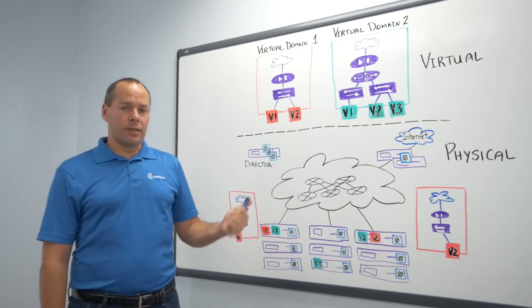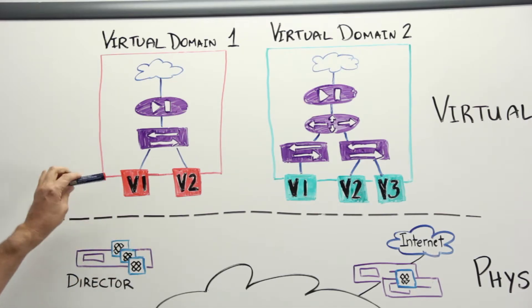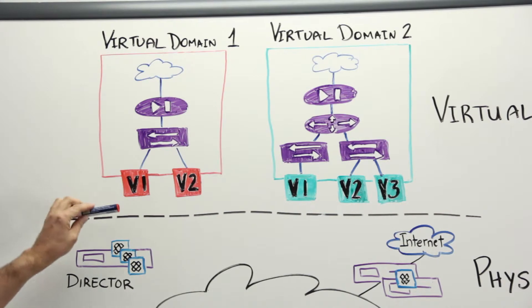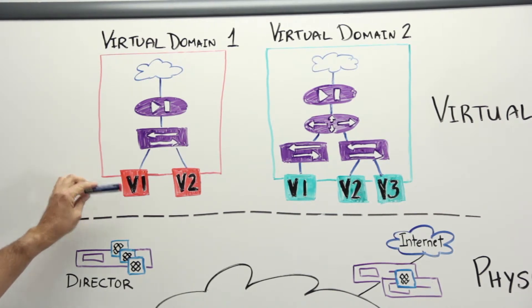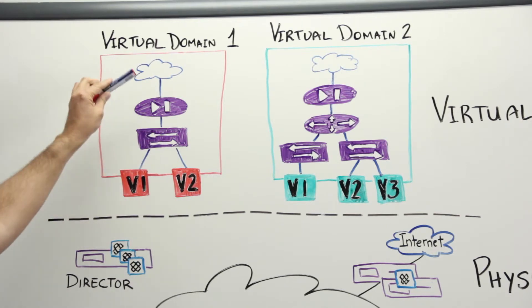What we're going to demonstrate in this first one is looking at virtual domain 1. We have virtual machine 1, virtual machine 2, connected through a bridge with external connectivity.